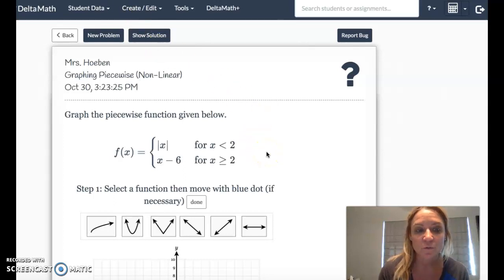The problem we're going to look at today has two parts to the piecewise graph. When x is less than 2, we're going to graph the absolute value of x. And when x is greater than or equal to 2, we're going to graph the line x minus 6.